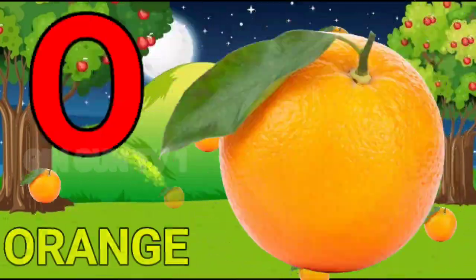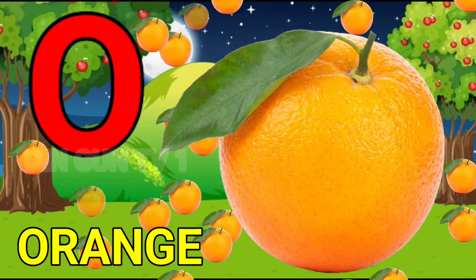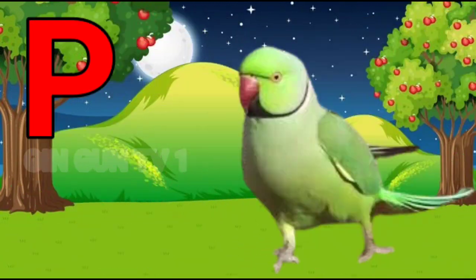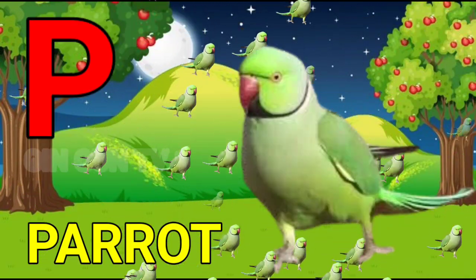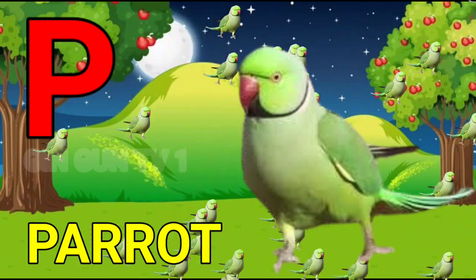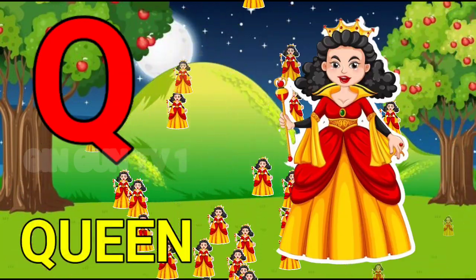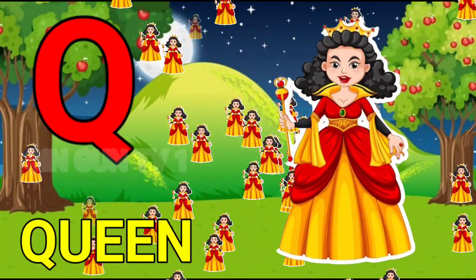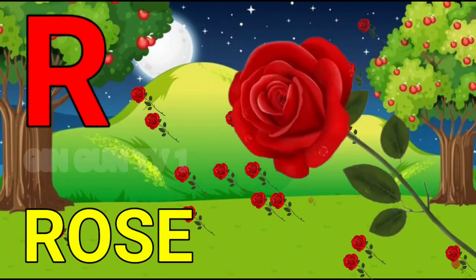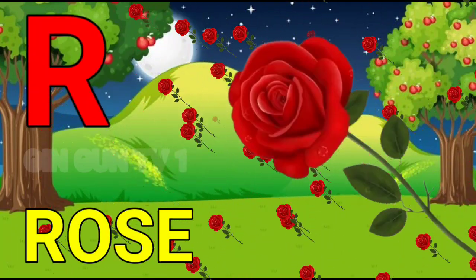O for orange, orange means santra. P for parrot, parrot means toota. Q for queen, queen means runny. R for rose, rose means kulab.